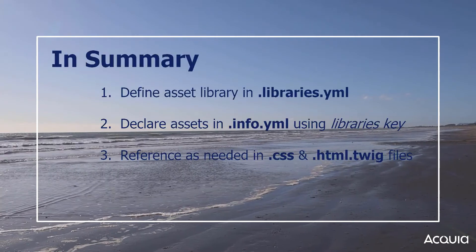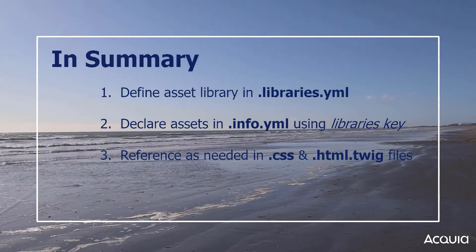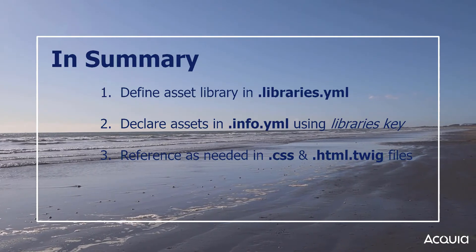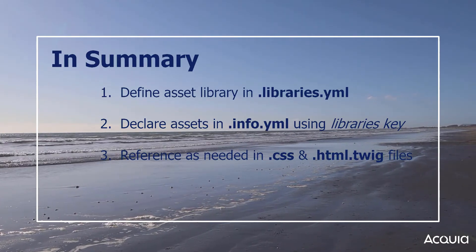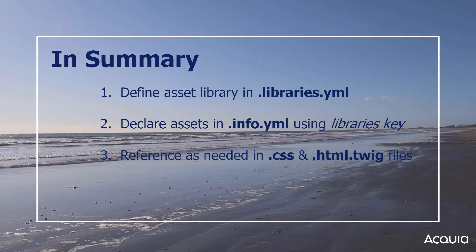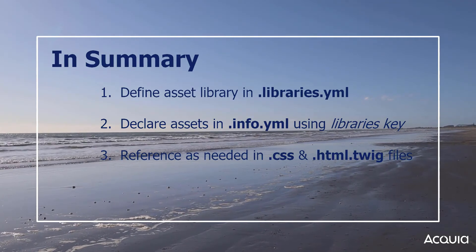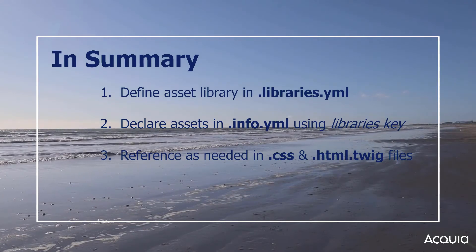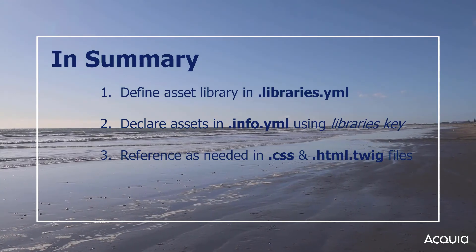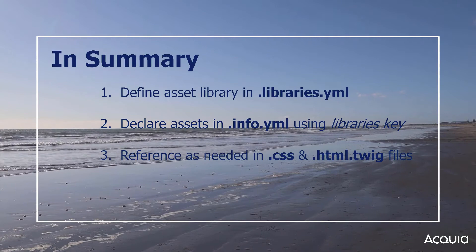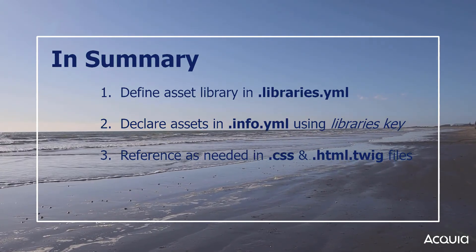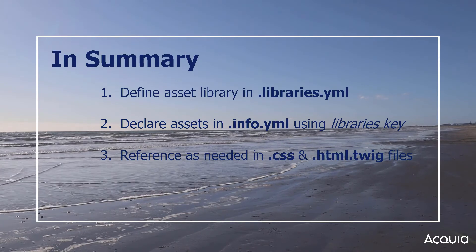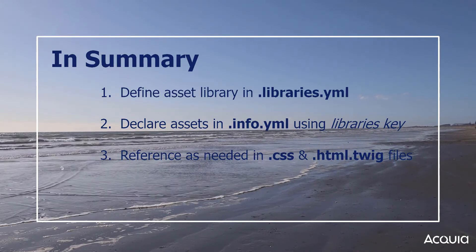Excellent! Nice job on getting an overview of how to add libraries as dependencies to your theme. Remember, this is a three-part process. First, define the asset library and any specific containers in your libraries.yaml file. Then, declare the assets with the libraries key in your info.yaml file. And finally, reference these assets as needed in CSS files or html.twig files. Coming up, let's go ahead and add some CSS assets to your theme.